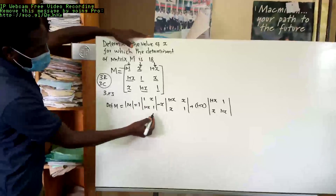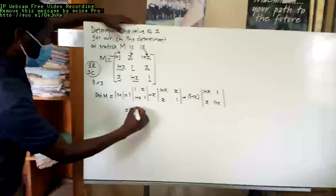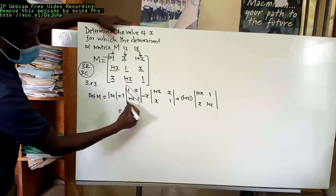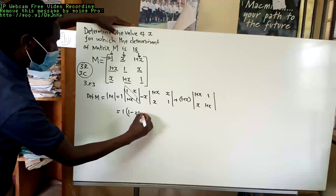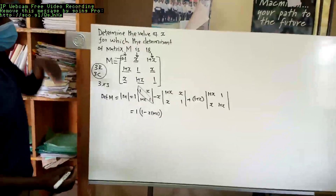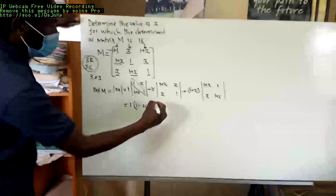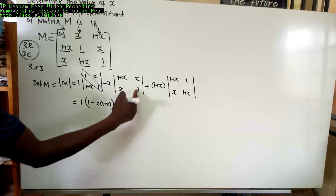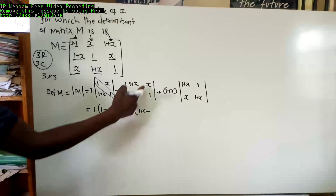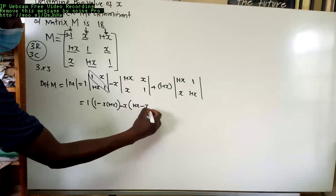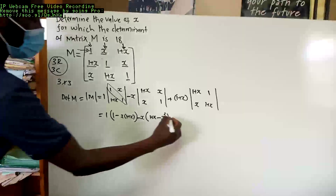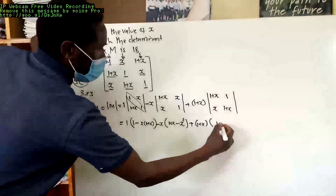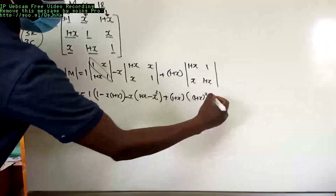From here, we are going to get the determinant of each 2 by 2 matrix. It is equal to 1 into the product of the leading diagonal, which is 1 times 1, subtract the product of the minor diagonal, which is X into 1 plus X. Then minus X into the leading diagonal 1 plus X times 1, subtract the minor diagonal X times X which gives X squared. Then 1 plus X into the leading diagonal which is 1 plus X squared, minus the minor diagonal which is X.